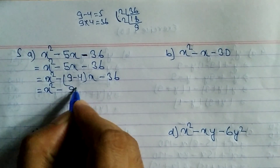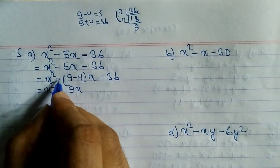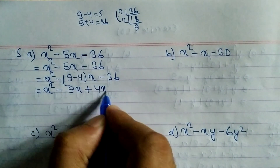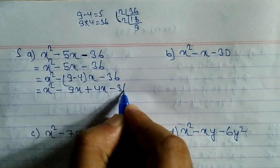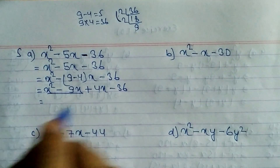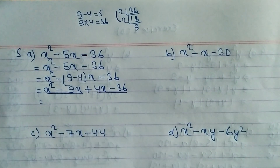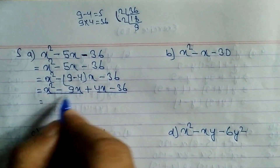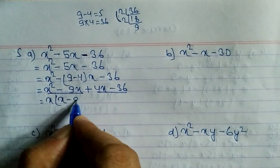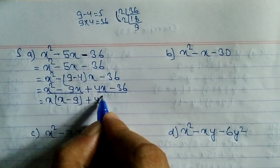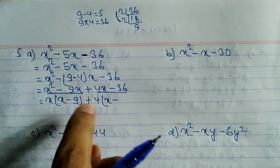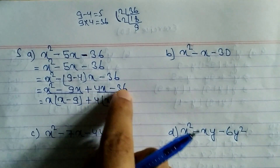Now open the bracket: x² - 9x + 4x - 36. From the first two terms we take x as common, giving x(x - 9), and from the last two terms we take 4 as common, giving 4(x - 9).